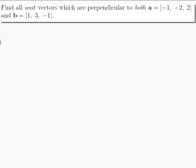The question is find all unit vectors which are perpendicular to both a which is equal to minus 1, minus 2, 2 and b which is equal to 1, 3, minus 1. Well I don't know what the vectors perpendicular to that are so I think a reasonable thing to do would be to write them down.